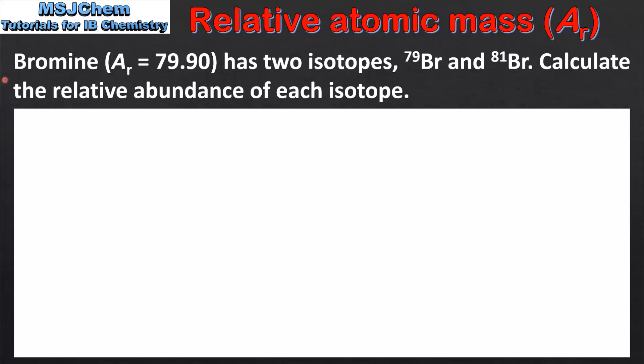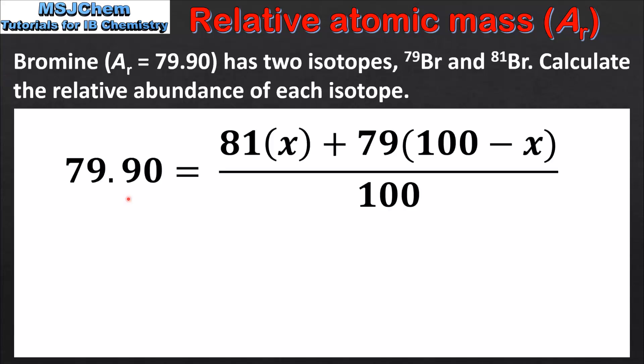We'll end the video by looking at how to calculate the relative abundance of isotopes. So in this question we're told that bromine with a relative atomic mass of 79.90 has two isotopes bromine 79 and bromine 81. And we'll calculate the relative abundance of each isotope. To do this we set up the equation as shown and solve for x.